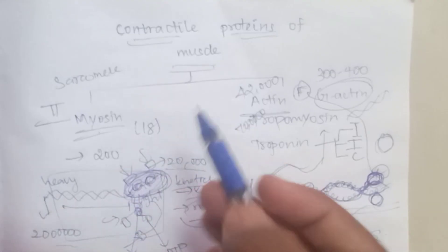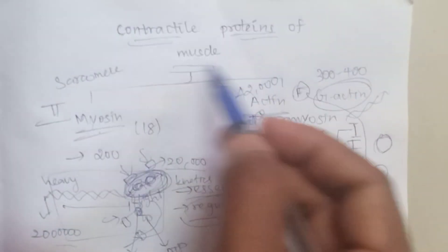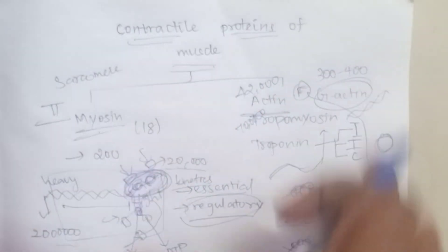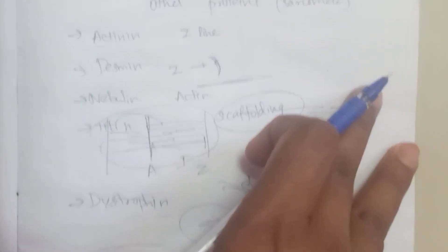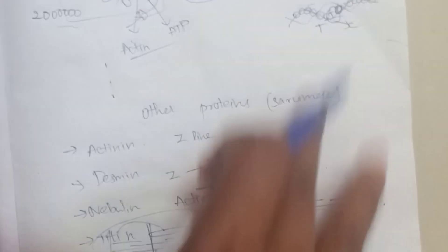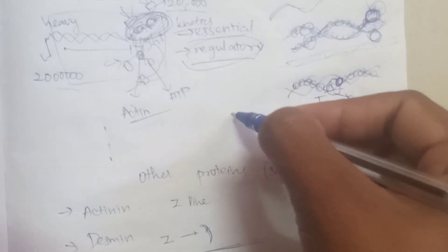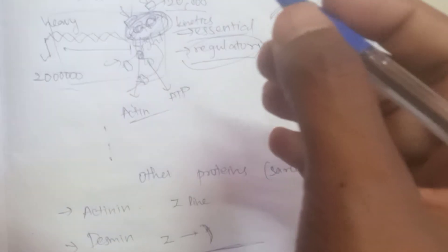Okay guys, today's video covered contractile proteins of the sarcomere, structural proteins, accessory proteins that help the muscle cell, and myoglobin. See you all in the next video. Thanks for watching!